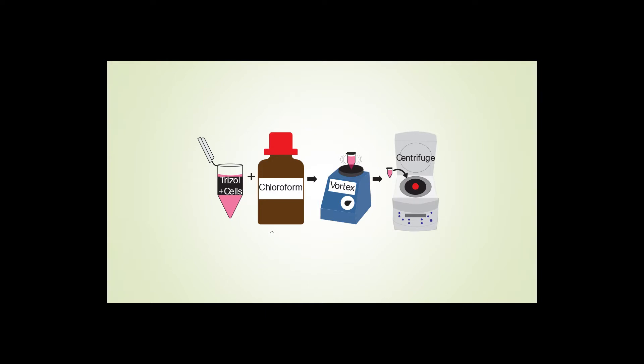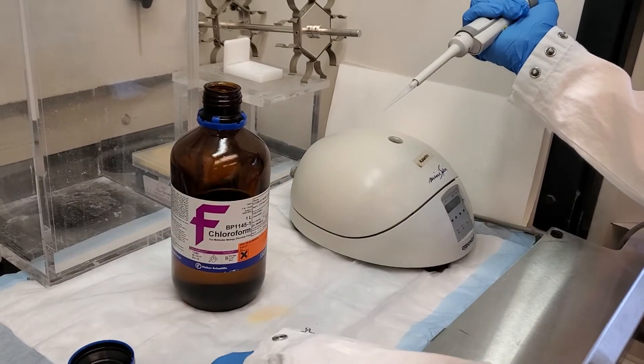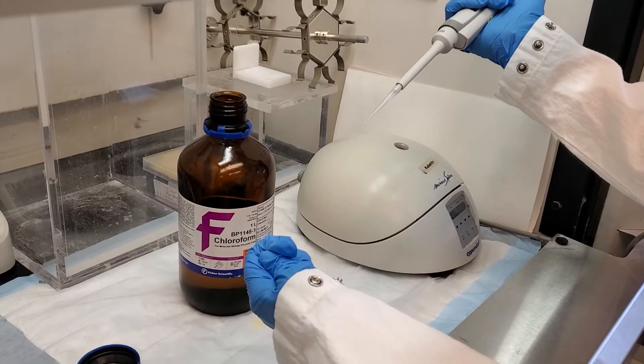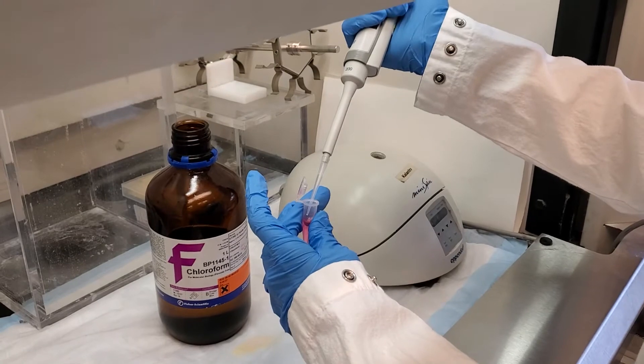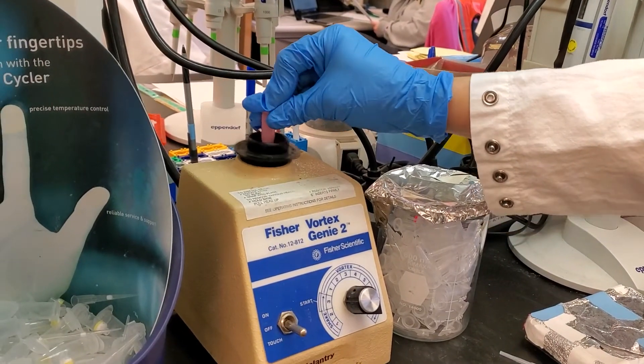We'll need to add chloroform to our trizol, vortex, and then centrifuge. We take 0.2 milliliters of chloroform, add it to our cell and trizol mixture, and then proceed to vortex for about one minute.